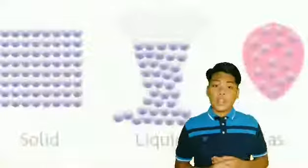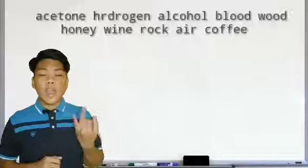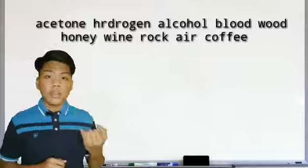These are solid, liquid, and gas. So let us help Joanna to categorize the given matter based on their physical state. We have 10 examples that we're going to categorize: acetone, hydrogen, alcohol, blood, wood, honey, wine, rock, air, and coffee.